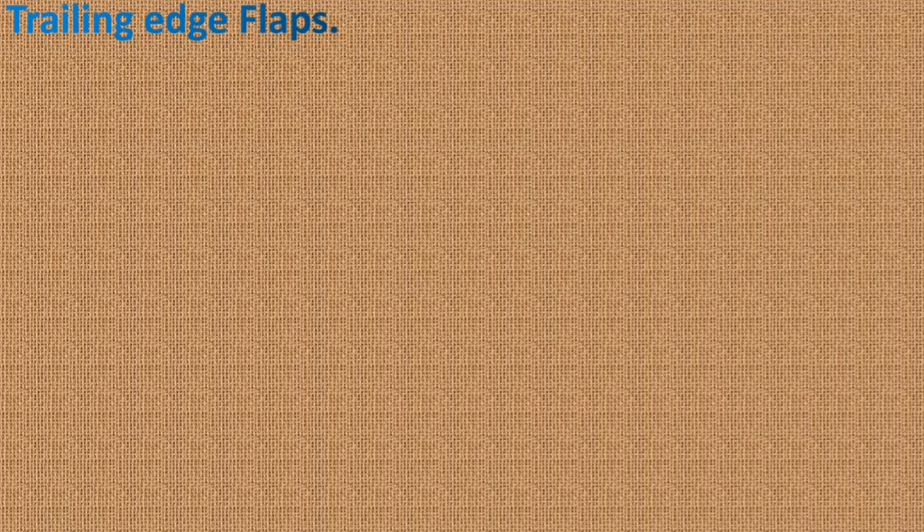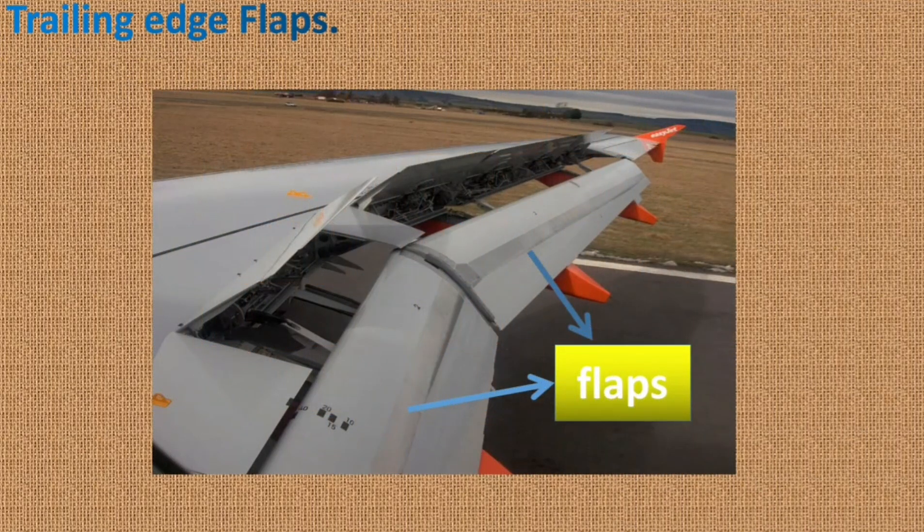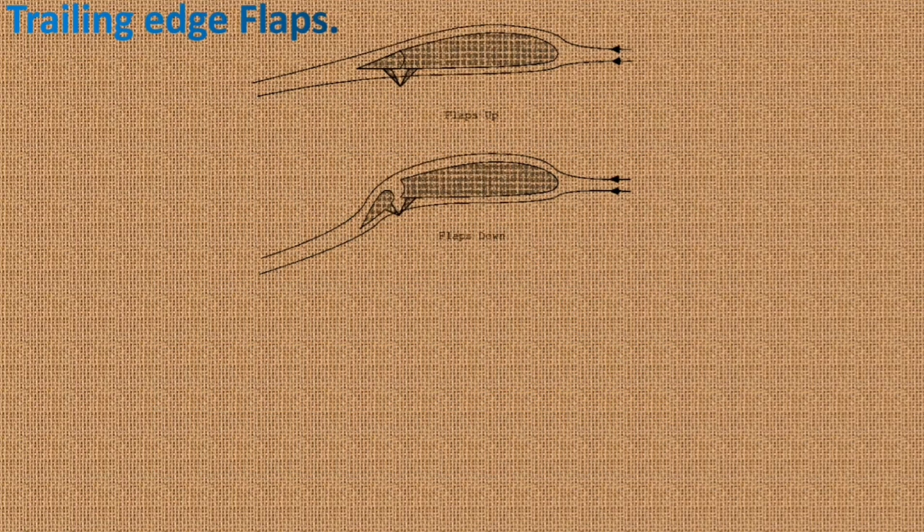Trailing edge flaps are high lift devices consisting of hinged panels mounted on the trailing edge of the wing. When the flaps are extended, they increase the camber and in most cases, the chord and surface area of the wing, resulting in an increase of both lift and drag and a reduction of the stall speed.